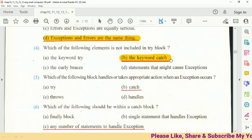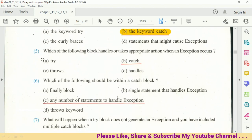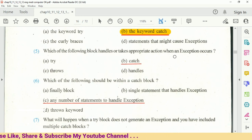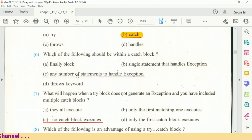Question five: which of the following block handles or picks appropriate actions when exception occurs? Answer: B, option catch. Question six: which of the following should be within a catch block? Answer: any number of statements to handle exception.